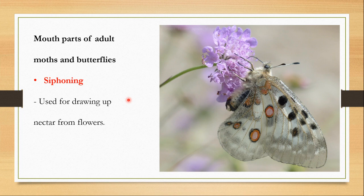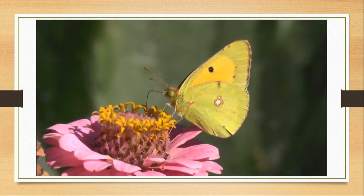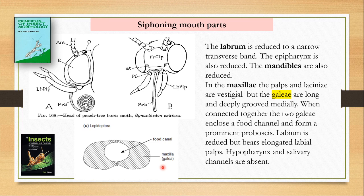We will end with the siphoning type of mouthparts. Siphoning mouthparts are found in butterflies and adult moths, helping them use these mouthparts like a straw to draw liquid from flowers — flowers have nectar at the bottom and these mouthparts are used to collect it. Here the labrum is reduced to a narrow transverse band, the epipharynx is also reduced, and the mandibles are also reduced.